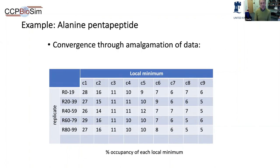However, instead of treating each replicate individually, you can take them in groups of 20 and chunk the data together. When you analyze groups of 20 simulations, you can see convergence occur before your eyes: no matter whether you're looking at simulations 0 to 19 or 20 to 39, the predictions about how much time alanine pentapeptide spends in any conformational state are highly converged. In particular, the time in the alpha-helical state C4 is reliably between 10 and 11 percent, which is why we could make that statement on the previous slide.